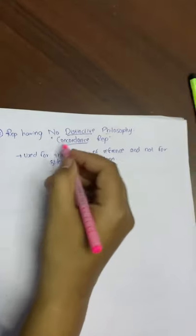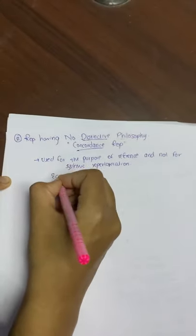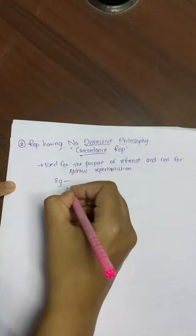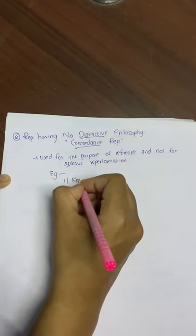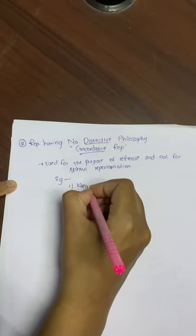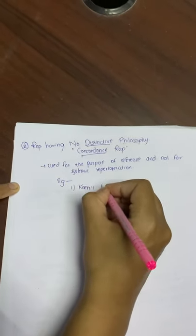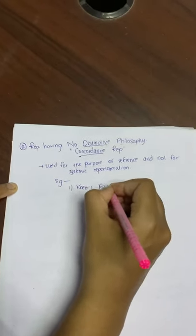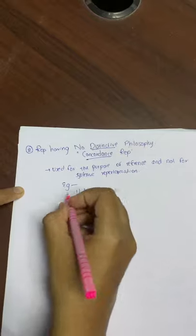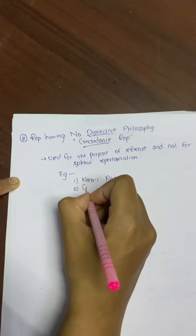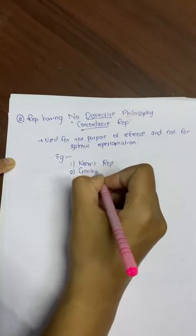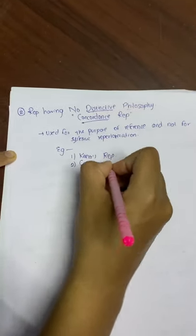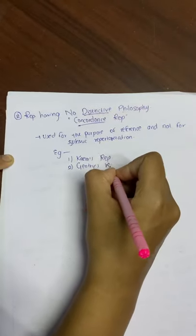Examples of concordance repertories are Nair's Repertory and Janitri's Repertory.